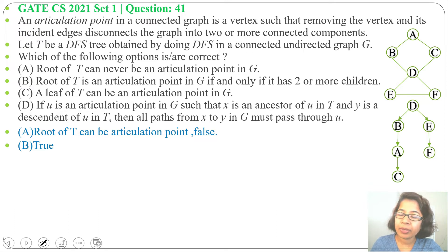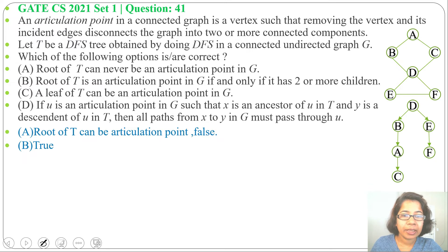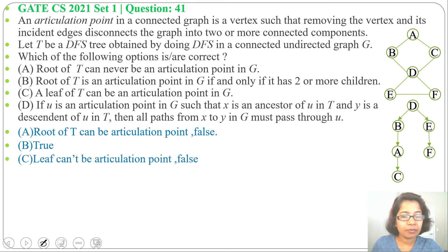Option C: a leaf of T can be an articulation point in G. A leaf cannot be an articulation point — the articulation point should be in the middle. If it is a leaf, then its removal will not make the graph disconnect. So a leaf of T can never be an articulation point; option C is false.